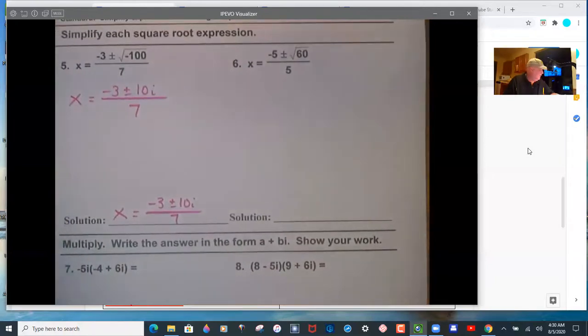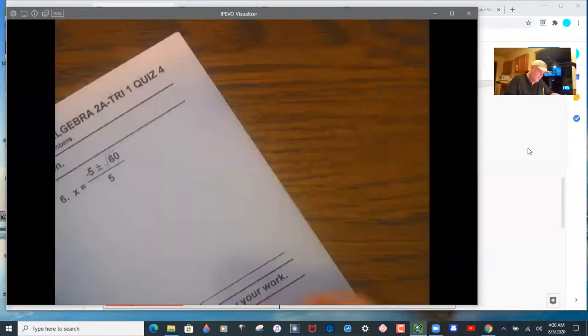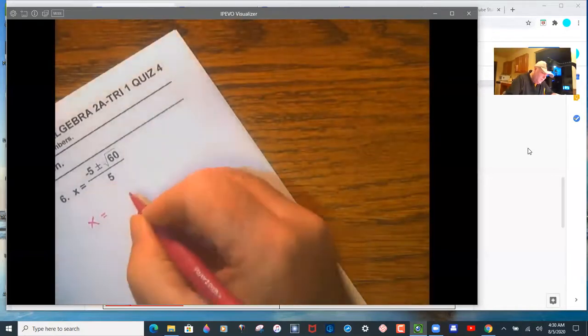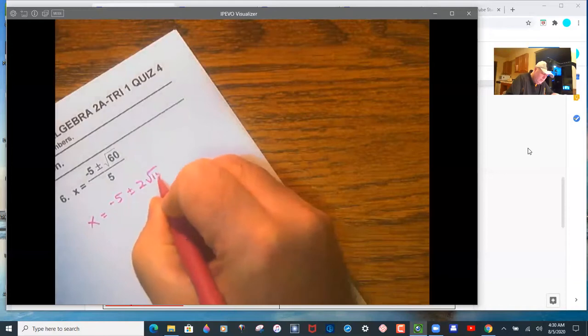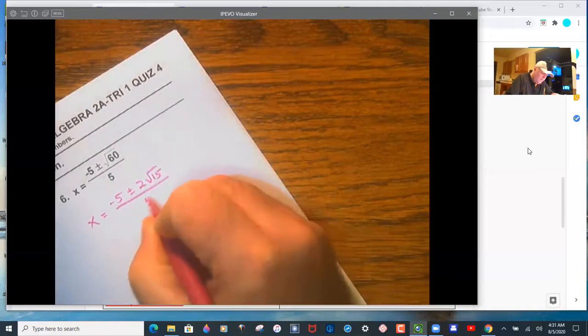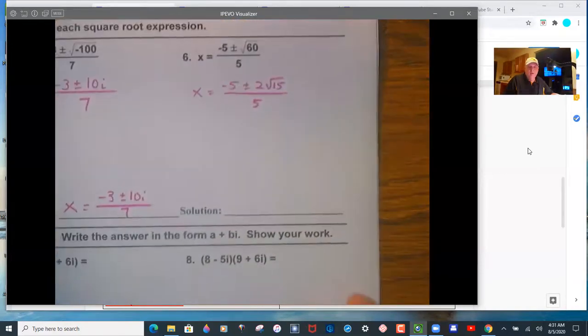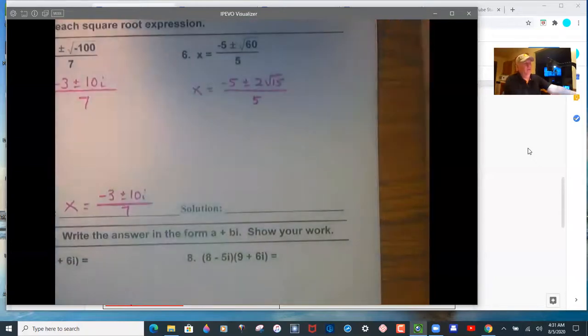And then 60, that will reduce to the square root of 4 times square root of 15, or 2 times the square root of 15, over 5. If you have trouble with that, just use the list.